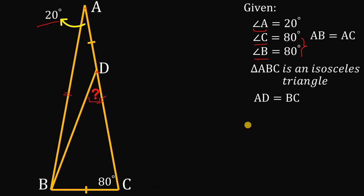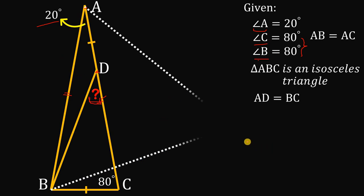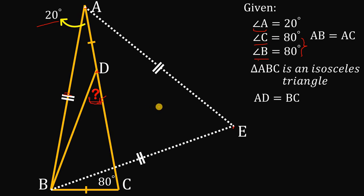To find this angle using only simple construction, we are going to construct an equilateral triangle using side AB. This new point over here, let's call it E. Triangle AEB is an equilateral triangle, so all sides must be congruent.